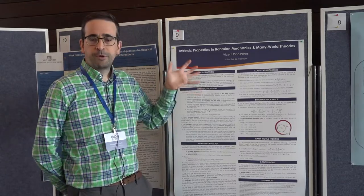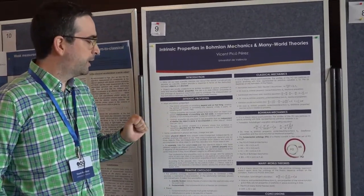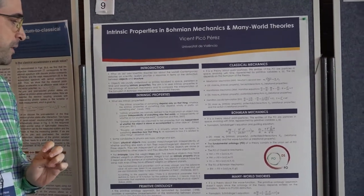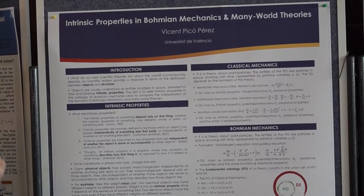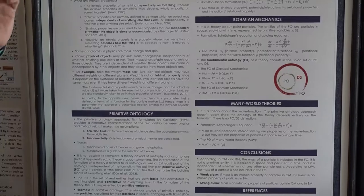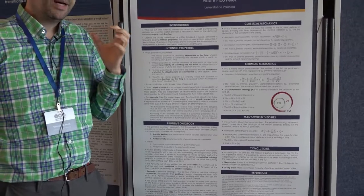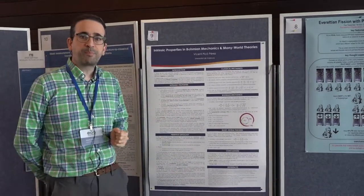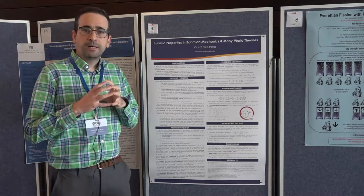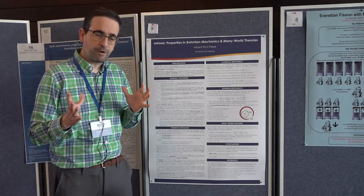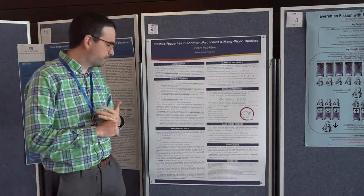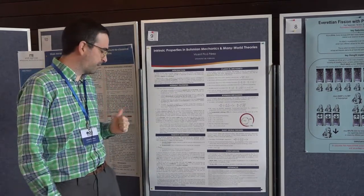The first thing was to define the notion of intrinsic properties in order to understand what theories of physics are saying about reality. We have three or four different definitions, but the key one is: intrinsic properties are those that objects possess independently of everything else that exists. With that in mind, let's move to a framework that allows us to interpret the formalism of several different theories — called the primitive ontology approach — where the ontology of a theory has to be understood as something basic and constitutive of the rest of reality.